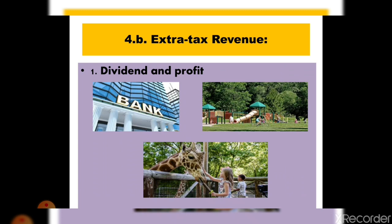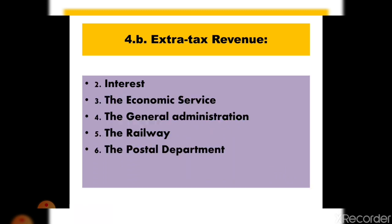The first source of extra tax revenue is dividend and profit, which can be earned from banks, insurance companies, and various non-banking financial organizations like parks, zoos, etc., at the end of the year. Another source is interest — the government gives loans to various financial and autonomous organizations throughout the year, and income comes from the interest received in this regard.